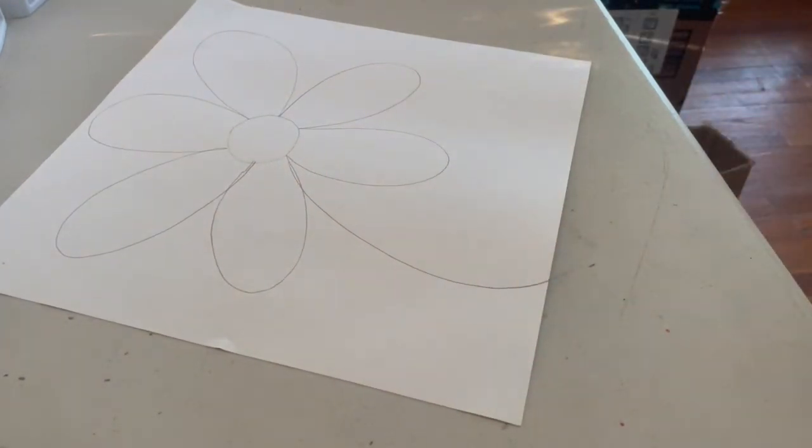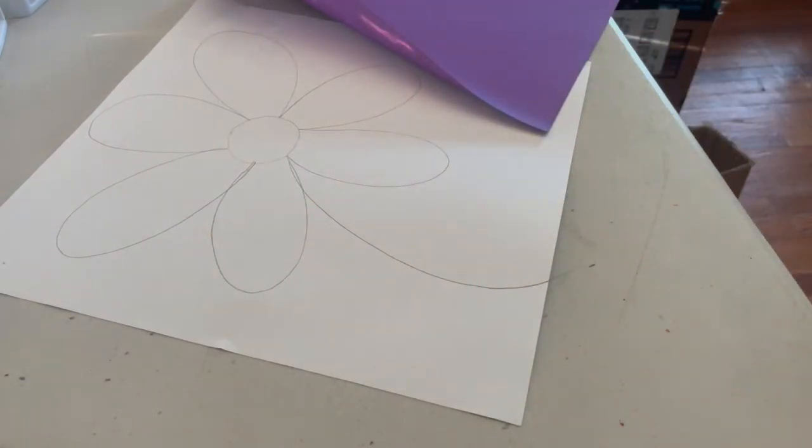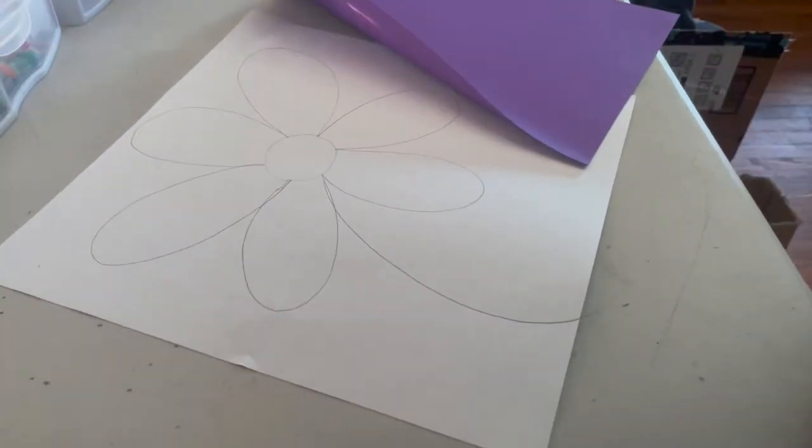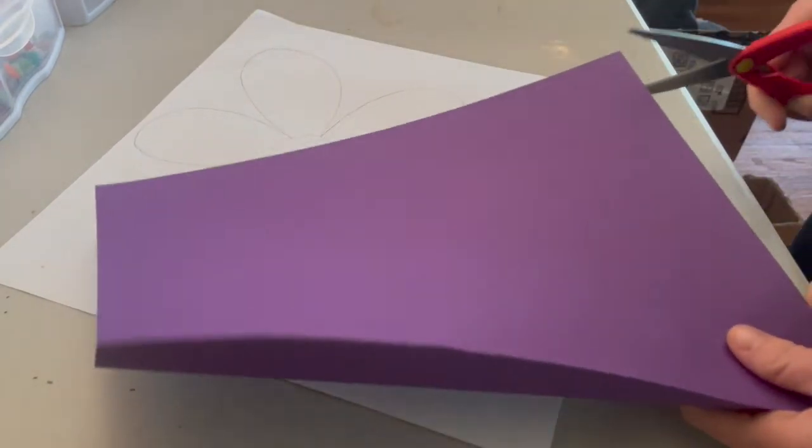Now you're going to go get your colored construction paper. Remember, if you don't have colored construction paper, you can use some white paper and color it with crayons or markers and then cut it up. Once you have your paper, we're going to cut it into tiny strips. We're going to first cut it into long rectangles.